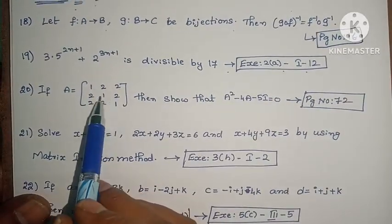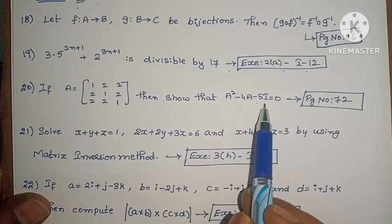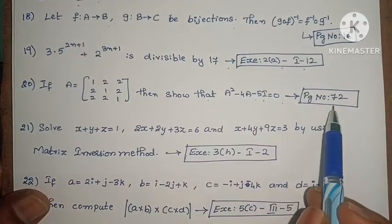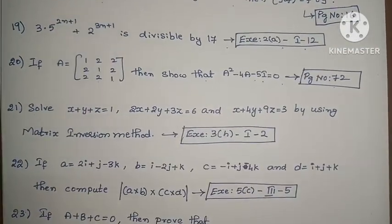Next, students, if A equals [1, 2, 2, 2, 1, 2], then show that A squared minus 4A minus 5I equals 0. Page 72, example problem. This is a 4 marks problem, but here it's given 7 marks.